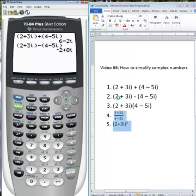We get negative 2 plus 8i. Real parts 2 minus 4 gives us negative 2. For 3i minus negative 5i, your minus and your negative together make a positive, giving us 8i.